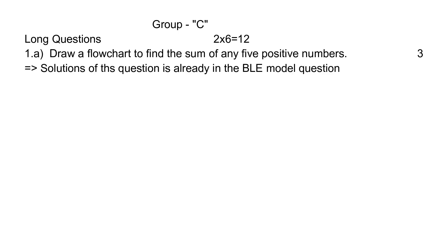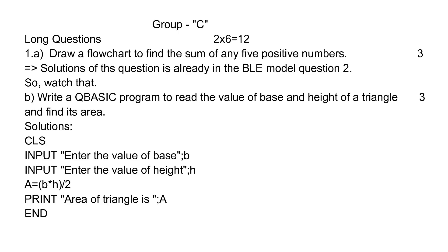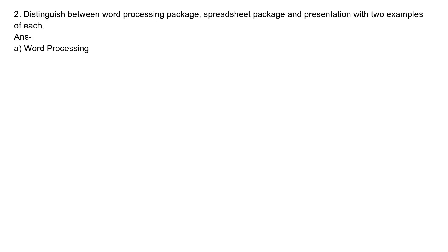Group C: Long questions. One: A: Draw a flowchart to find the sum of any five positive numbers. The solution to this question is already in the previous BLE model question video, so watch that. B: Write a BASIC program to read the value of base and height of a triangle and find its area. Solution: CLS; INPUT "Enter the value of base", B; INPUT "Enter the value of height", H; A = B * H / 2; PRINT "Area of triangle is", A; END.